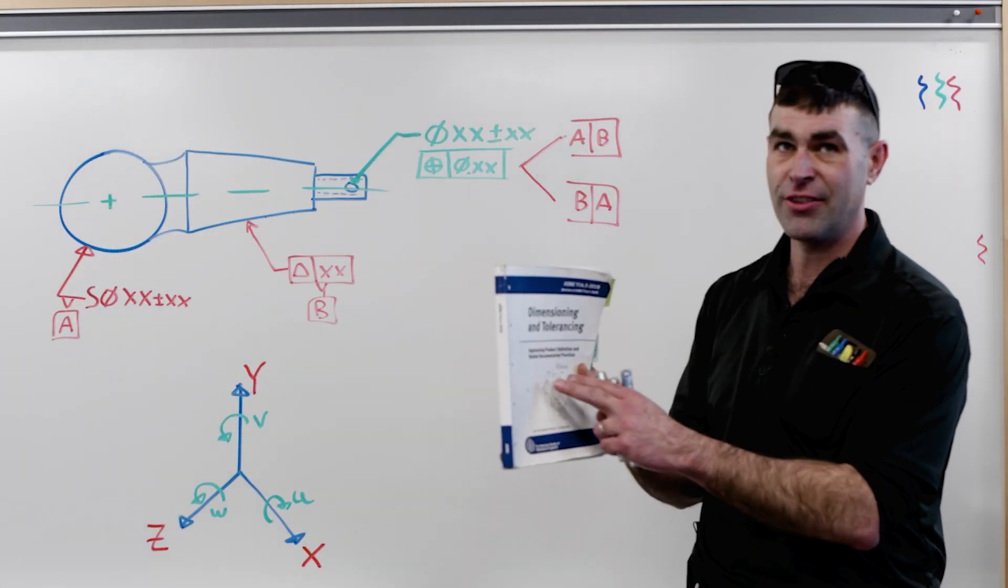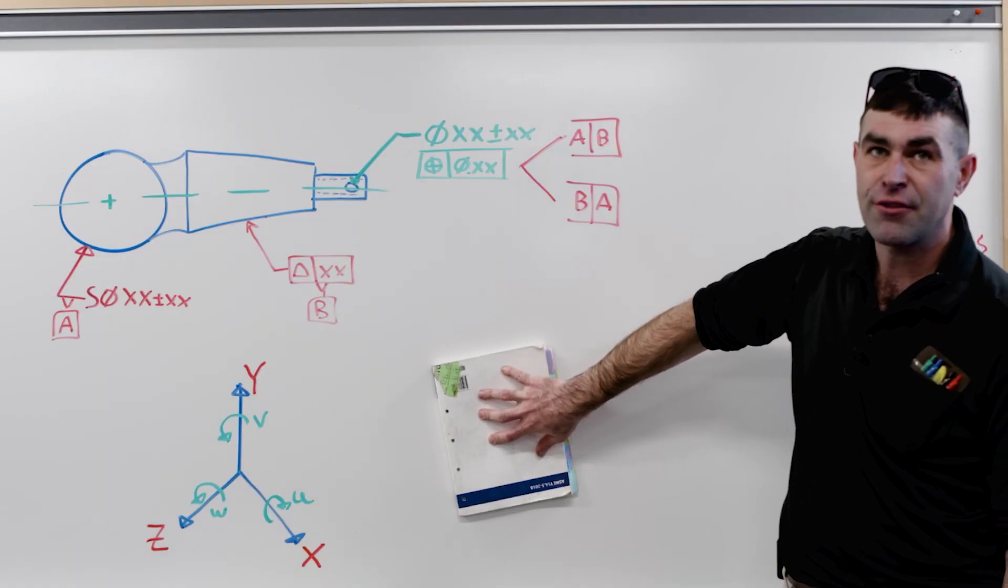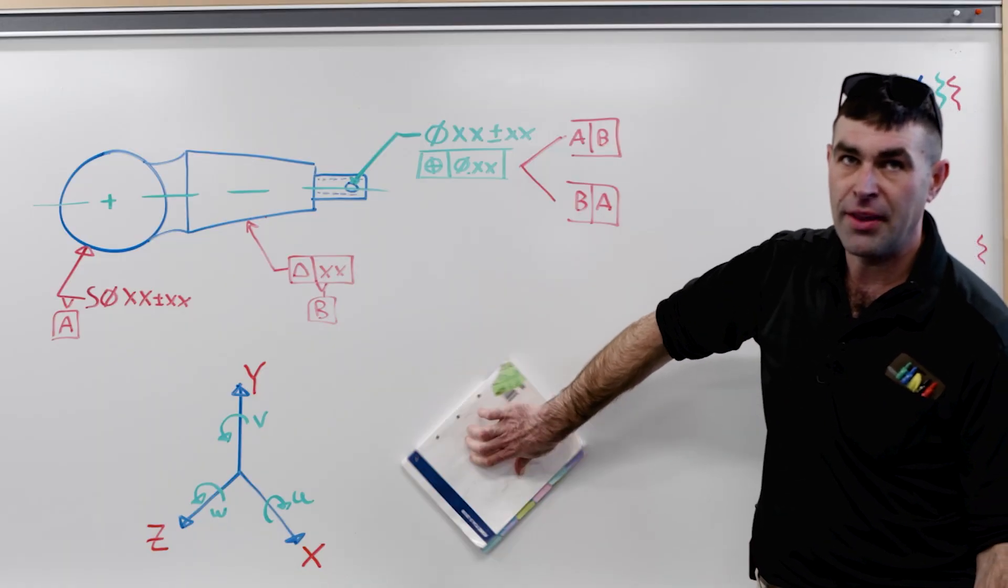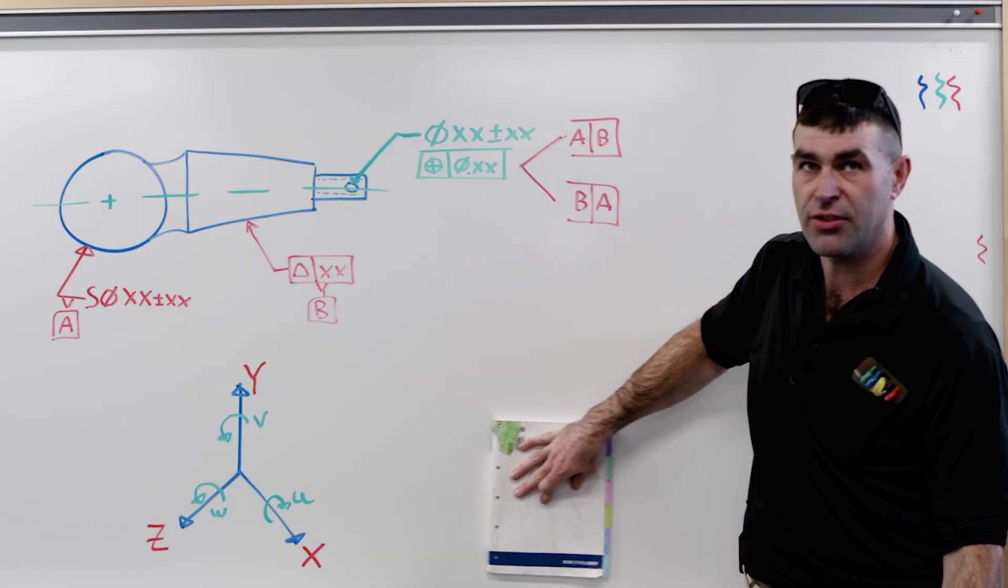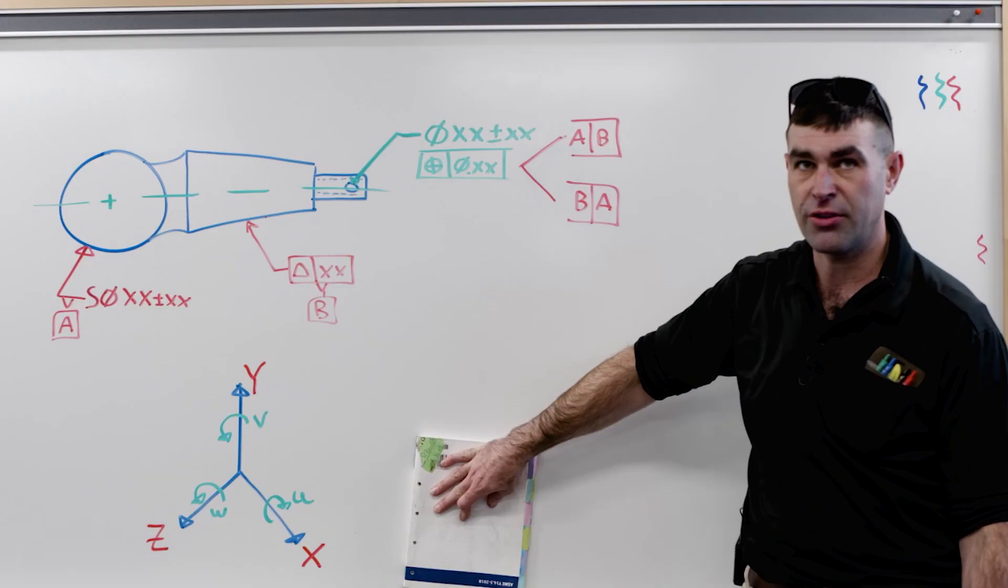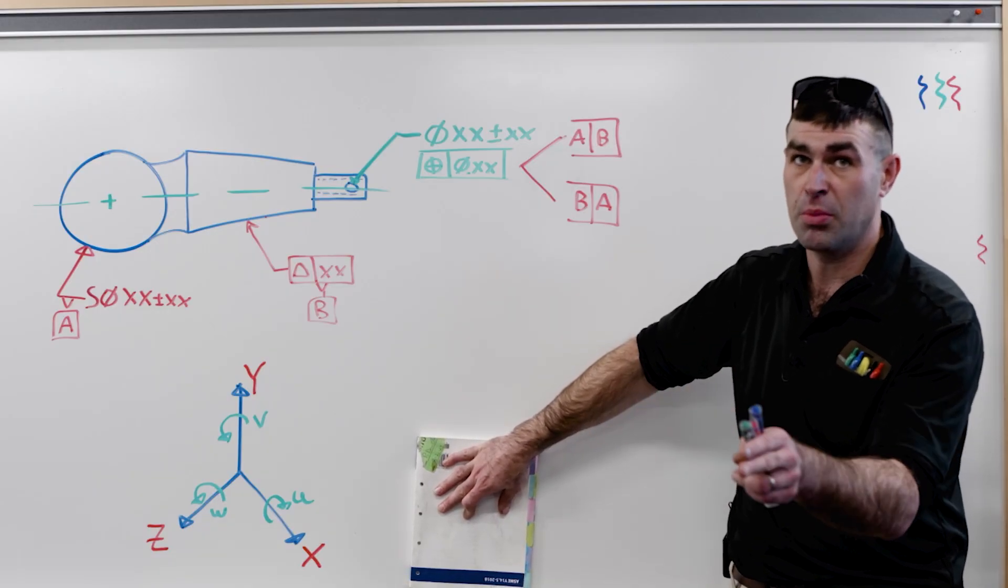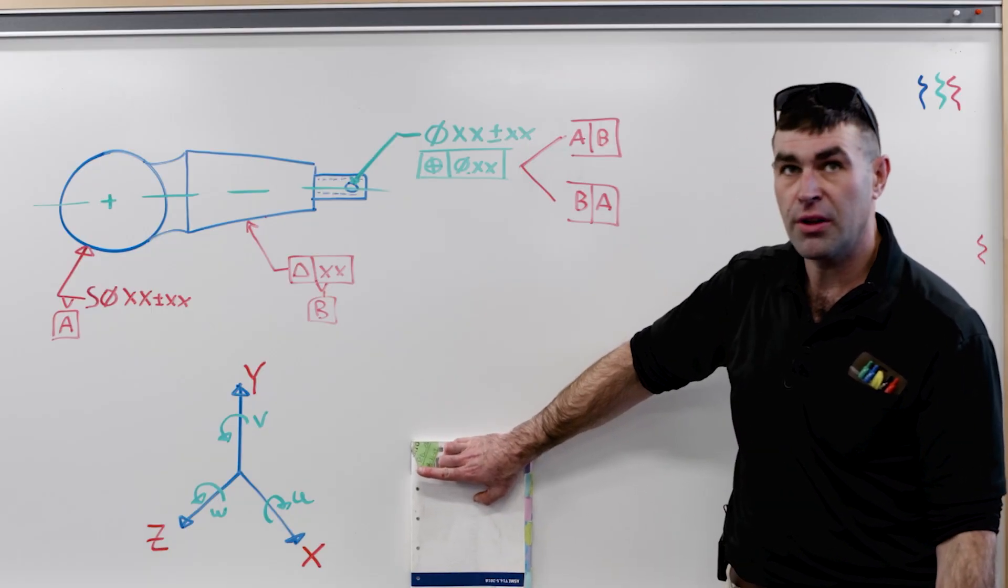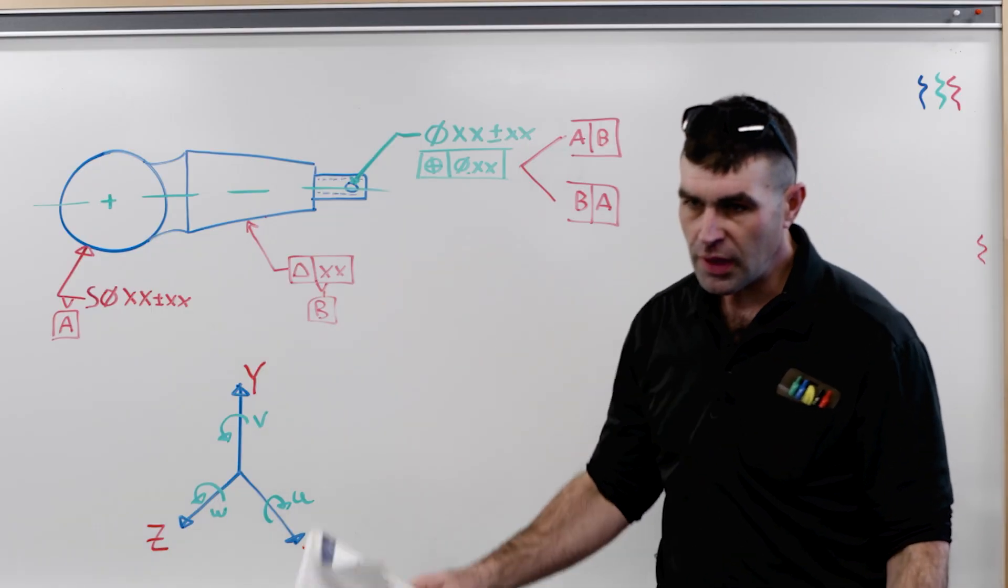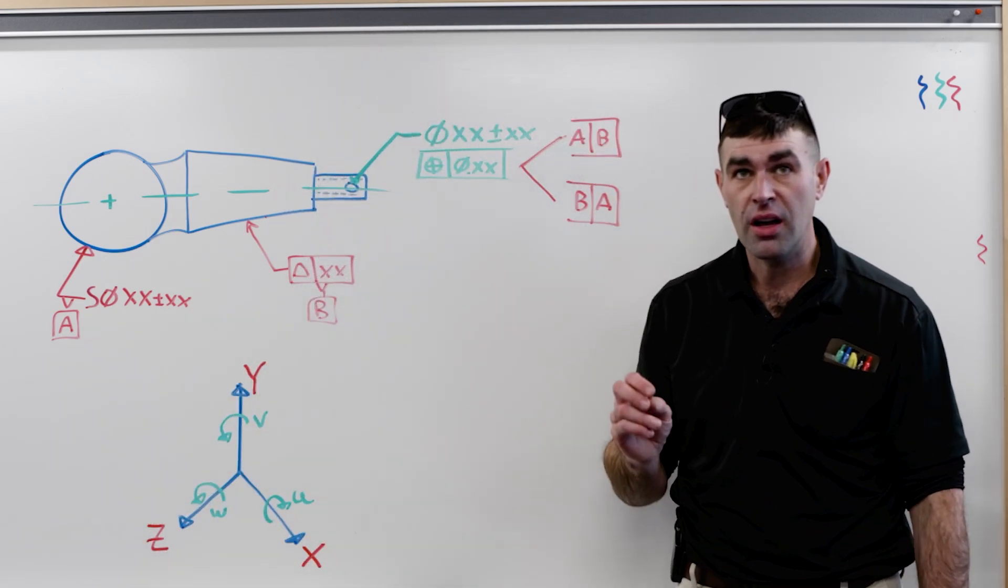And I can show that here. Say our Y14.5, this is datum A. If we stick it up against the board, it's free to rotate about its Z-axis, translate in the X direction, and translate in the Y direction. But it can't translate in Z. That's moving in and out of the board. And it can't rotate about little u or little v. So that's a quick example of degrees of freedom.